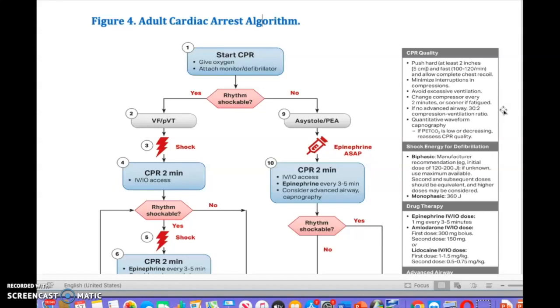Give the other person the chance to do CPR and then you can give the breaths. If no advanced airway is in place, you give thirty compressions to two breaths. We know that compression ventilation ratio. Quantitative waveform capnography. If the PETCO2 is low or decreasing, reassess CPR quality.